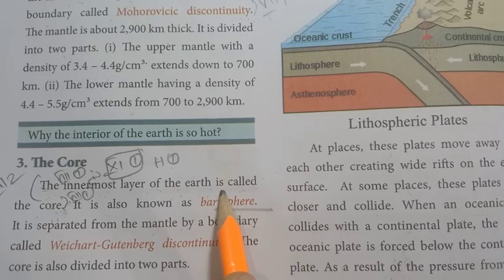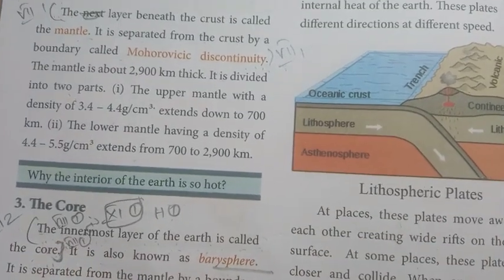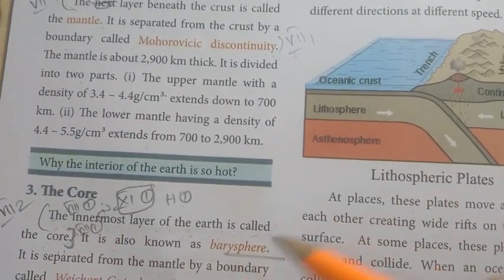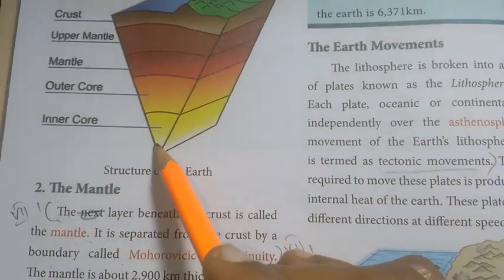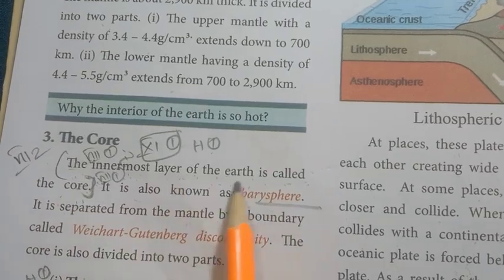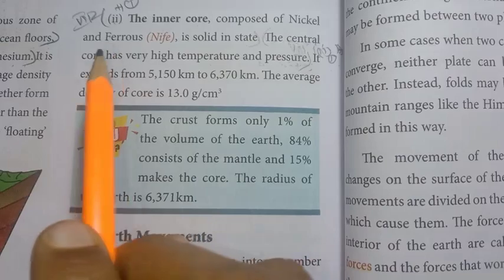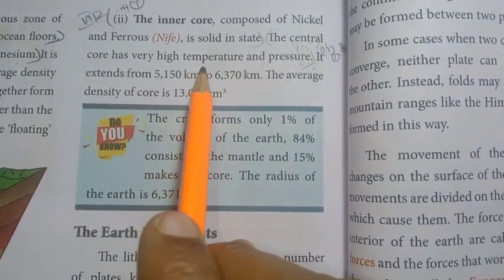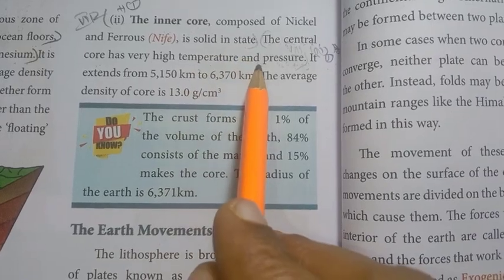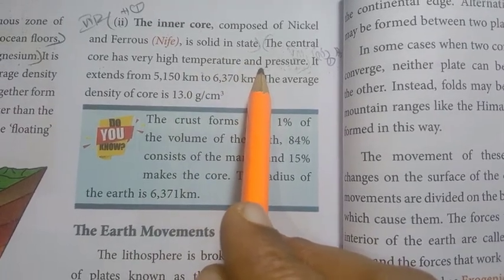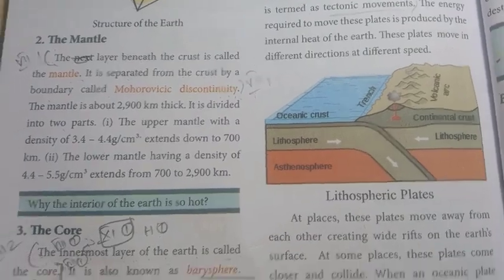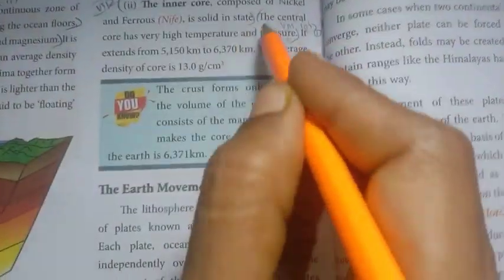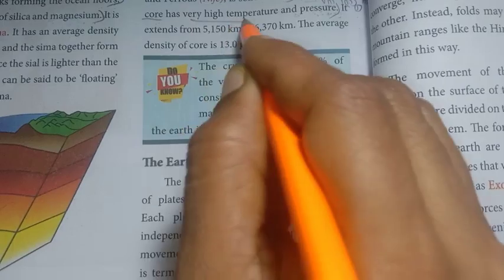Page number 146. The innermost layer of the earth is called the core, and it is located at the center. The temperature and pressure at the central core are very high — high temperature and high pressure.